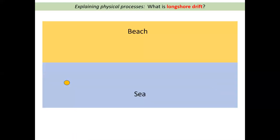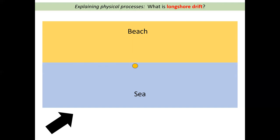Let's watch that again. Here we've got the beach and the sea. Watch what happens to the sand floating in the sea. Here's our prevailing wind — this is where the wind normally blows from. The swash comes on at an angle, the backwash comes back at 90 degrees; again blown at an angle, and you can see how the sand is zigzagging along the beach. Sand on this side of the beach will end up on the other side, having moved along the shore.